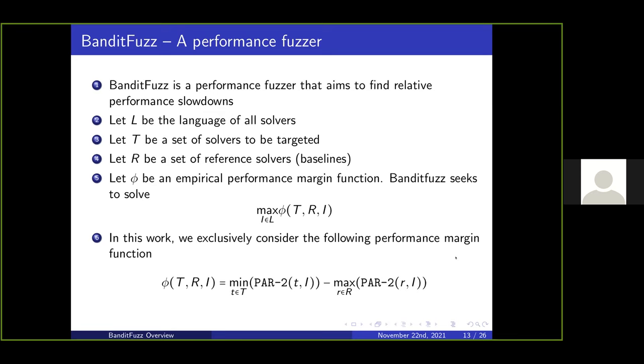Let me define more precisely what I mean by a performance margin. Let L be the language of all solvers, T be the set of target solvers, R be the set of reference solvers, and let φ be some empirical performance margin function. BanditFuzz seeks to find the maximum input to maximize this performance margin function. In this paper we consider the difference between the PAR-2 scores of the target and reference solvers. Specifically, the minimum PAR-2 score of all target solvers subtracted by the maximum PAR-2 score of all reference solvers. PAR-2 is the real runtime of the solver if successful, otherwise twice the wall clock timeout.